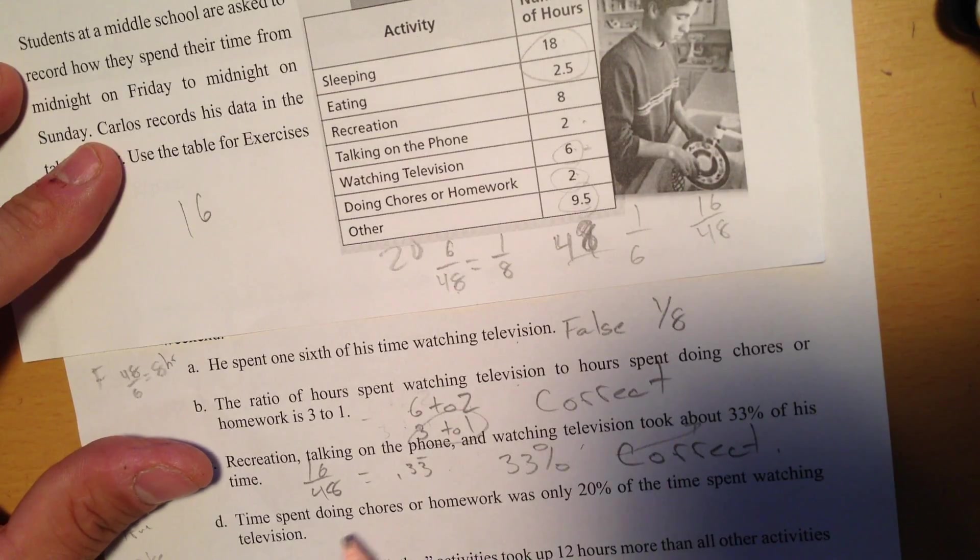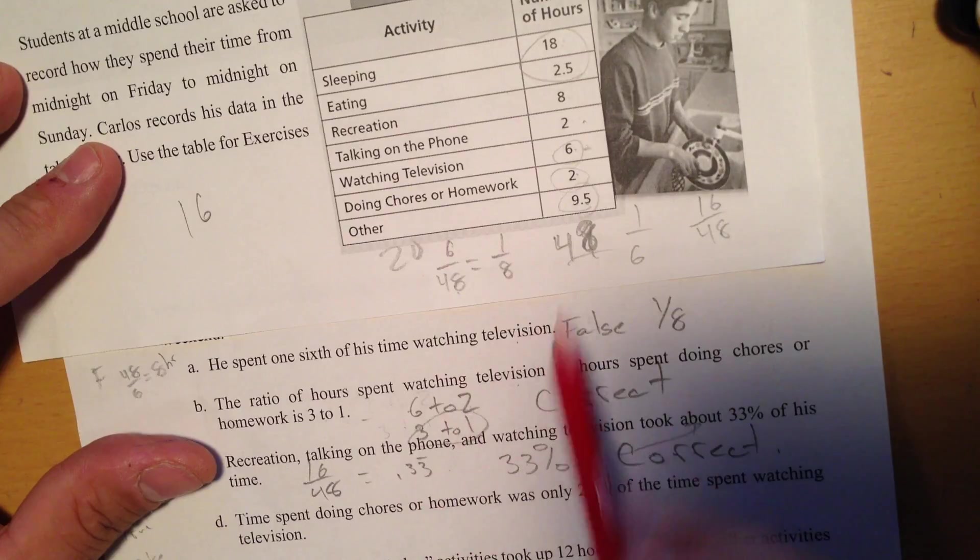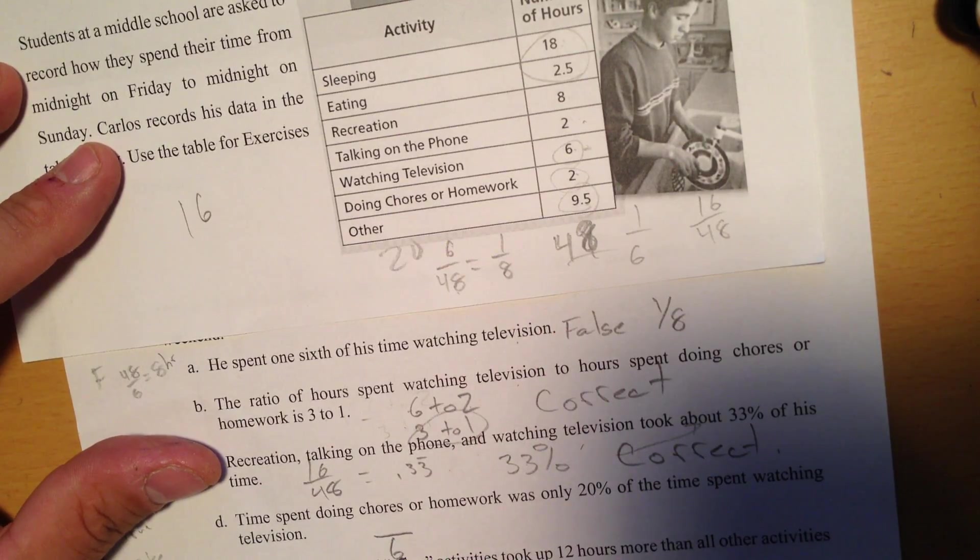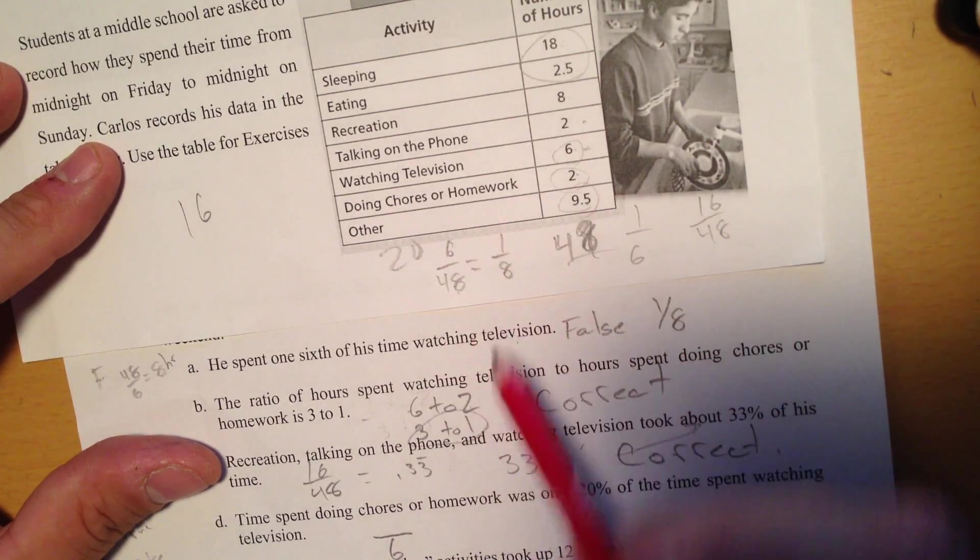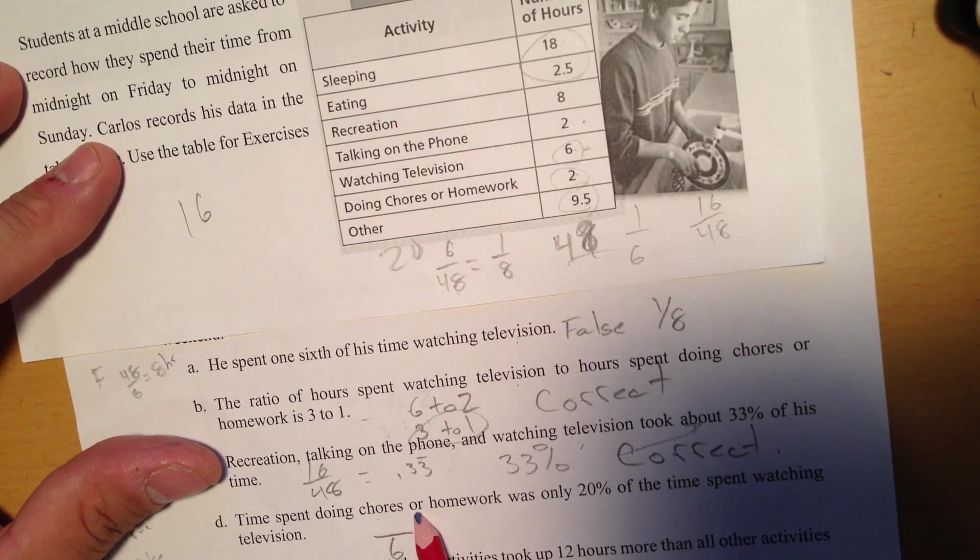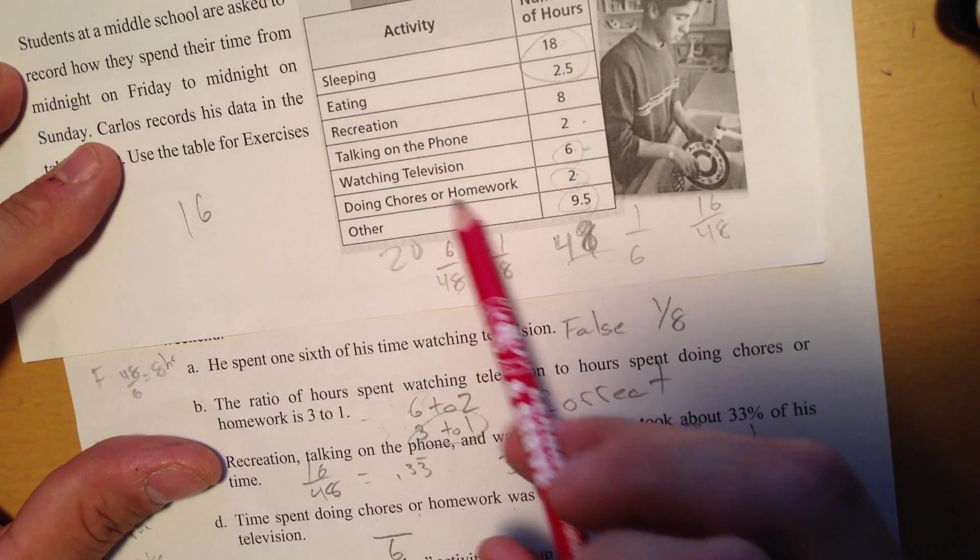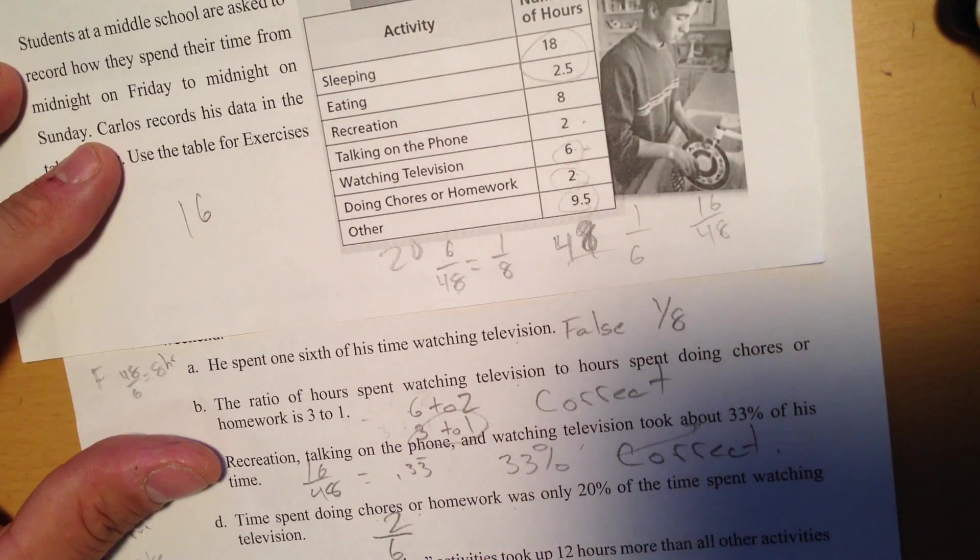Time spent doing chores or homework was only 20% of the time spent watching television. Well, television was 6 hours, so I'll put that on the bottom. Time spent doing chores or homework was 2.